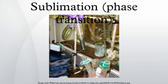For some substances, such as carbon and arsenic, sublimation is much easier than evaporation from the melt, because the pressure of their triple point is very high, and it is difficult to obtain them as liquids. Sublimation requires additional energy and is an endothermic change.